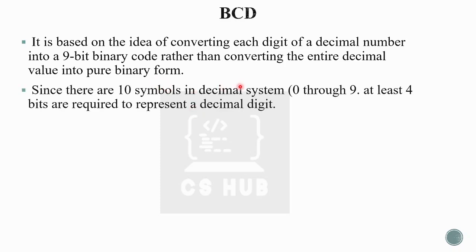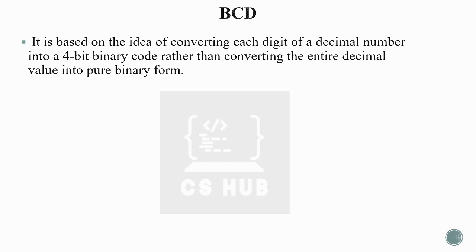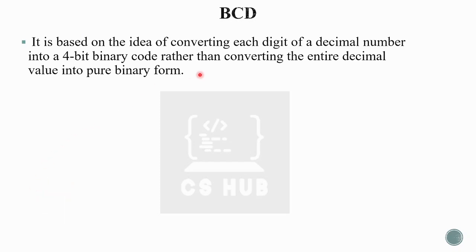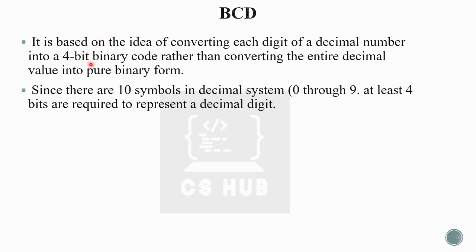Since there are ten symbols in the decimal system (zero through nine), at least four bits are required to represent a decimal digit. Up to zero through seven can be represented with three bits, but since we go up to nine, we need one more bit — that is, four bits — to represent any decimal digit.